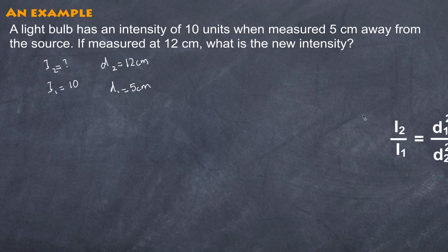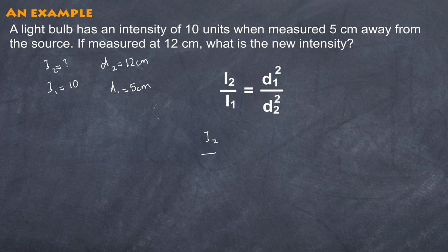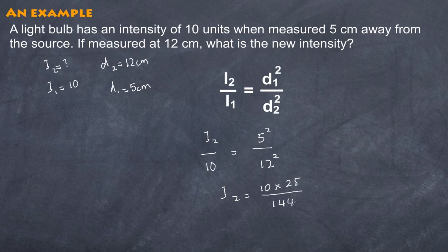We now substitute those things in, into our formula here. And so what we get is intensity 2 divided by intensity 1, and that is equal to 10, is equal to, now distance 1 is 5, and our distance 2 is 12, but we have to square both of them. And so what we get is that intensity 2 ends up being 10 multiplied by 25 divided by 144, which gives us a total of 1.74 units. And I've done that to 3 significant digits, in this case.